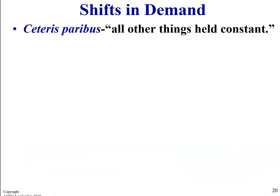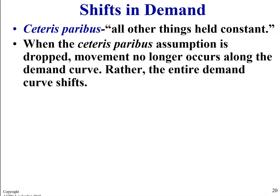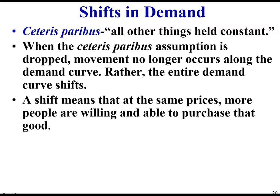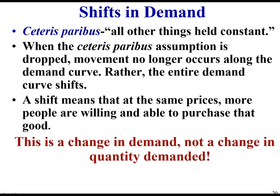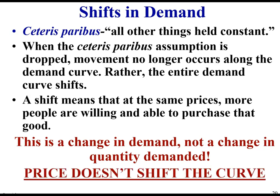Shifts in demand — if we hold all other things constant. When the ceteris paribus assumption is dropped, movement no longer occurs along the demand curve. Rather, the entire demand curve shifts. A shift means that at the same prices, more people are willing and able to purchase that good. There is a change in demand, not a change in quantity demanded. So if the only thing changing is the price, the demand curve is not going to shift.